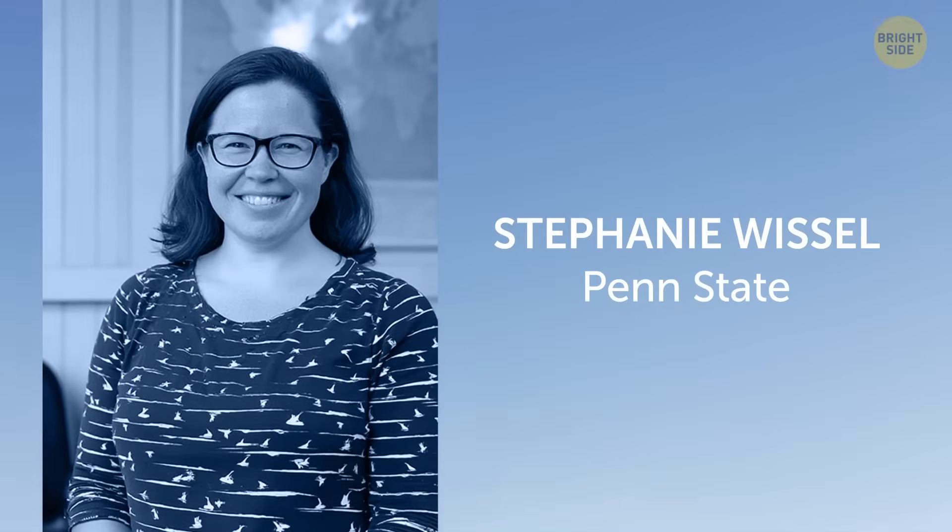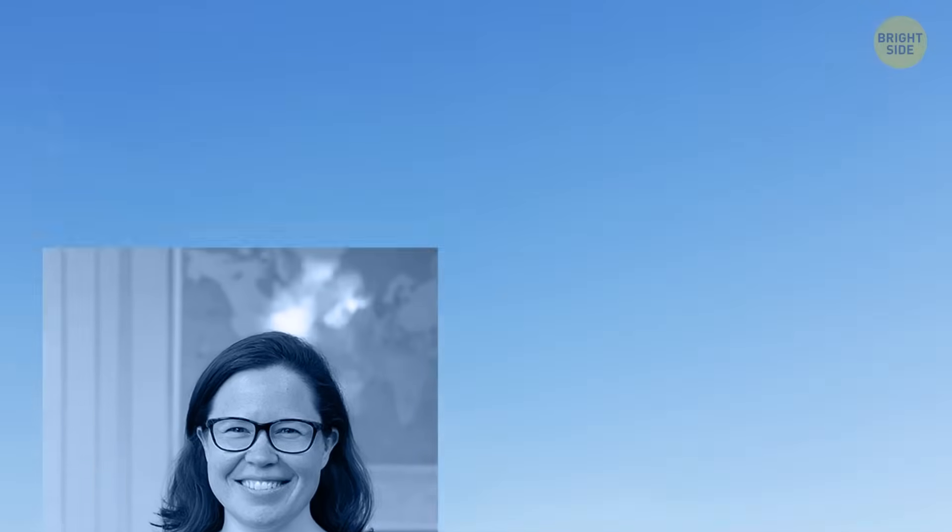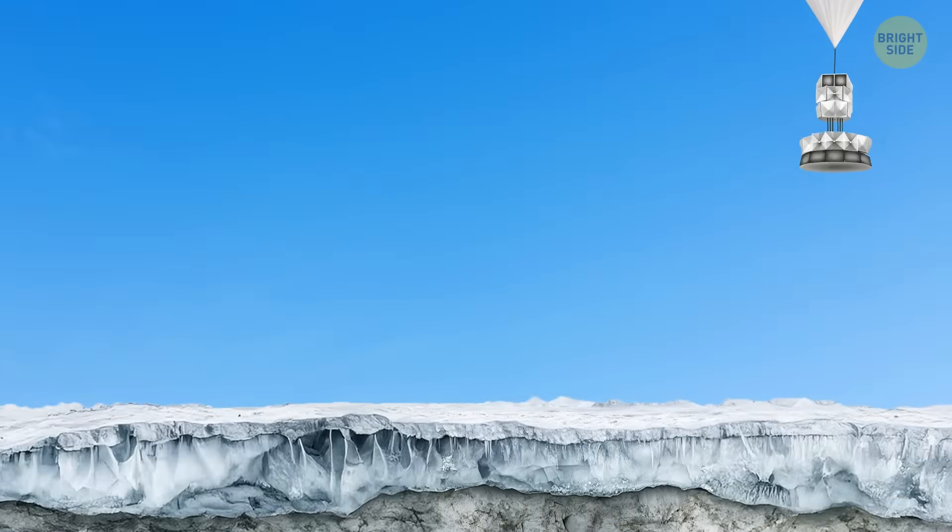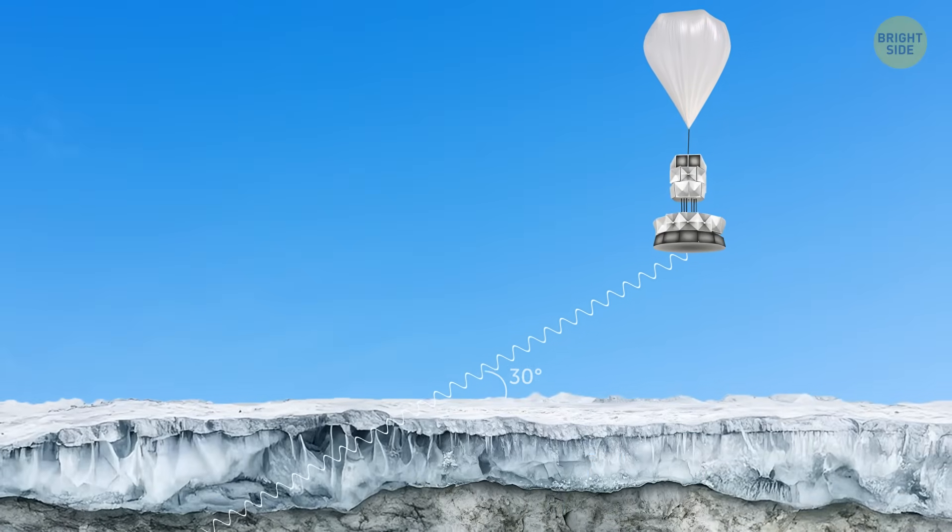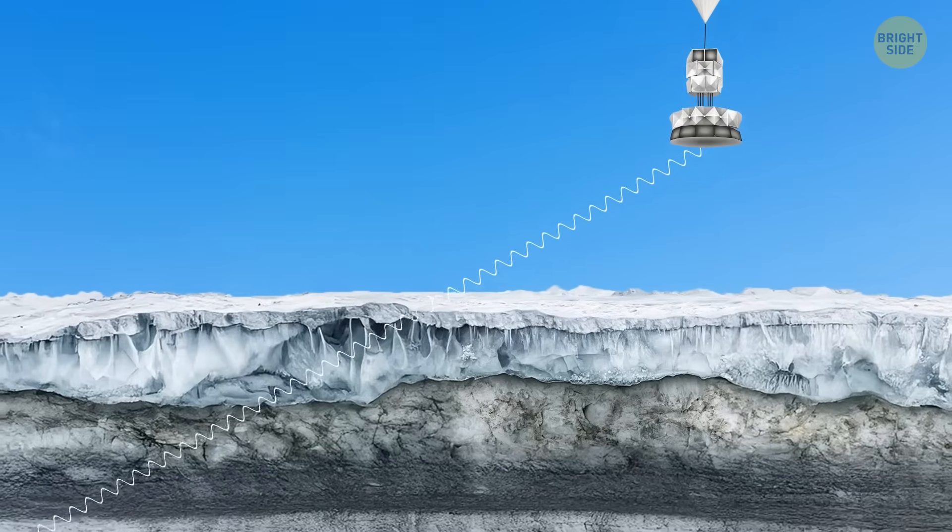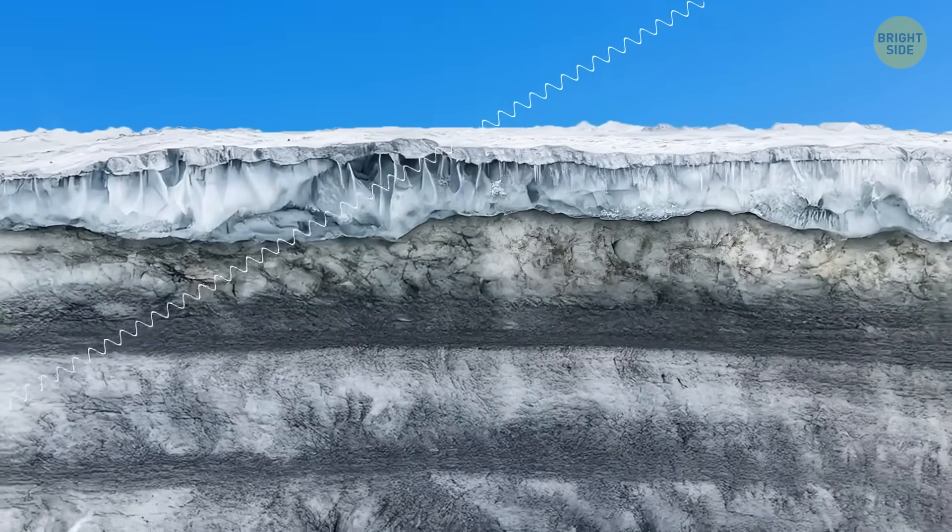One of the researchers, Stephanie Wiesel from Penn State, also said that those radio waves were coming in at super-steep angles, like 30 degrees below the surface. The only way that could happen is if the signal had passed through thousands of miles of solid rock before hitting the detector.